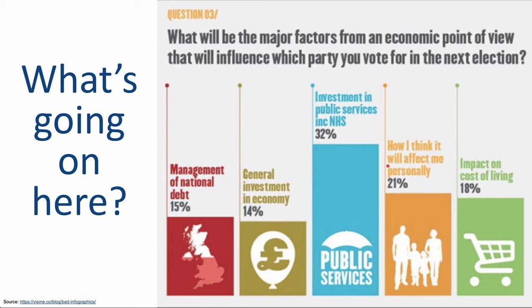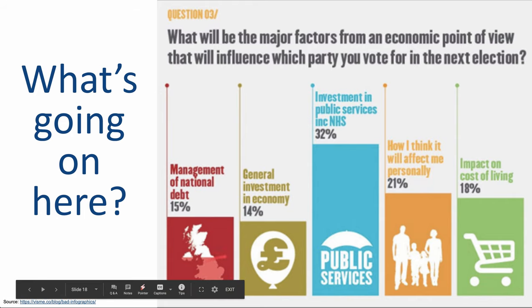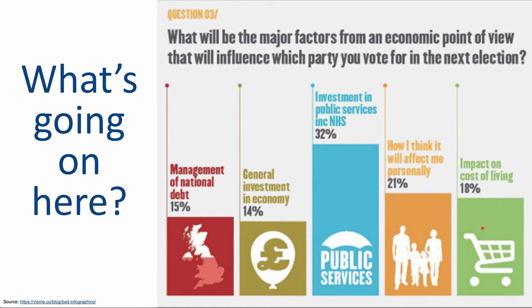What's going on here? It's a bar chart — it looks visually pleasing, and there are graphics at the bottom to help you understand each category. But you'll notice these five categories actually add up to 100%. Typically, if you have a numeric set that adds up to 100%, you'd traditionally use a pie chart to indicate that, so you can more easily see the relative size of the categories.